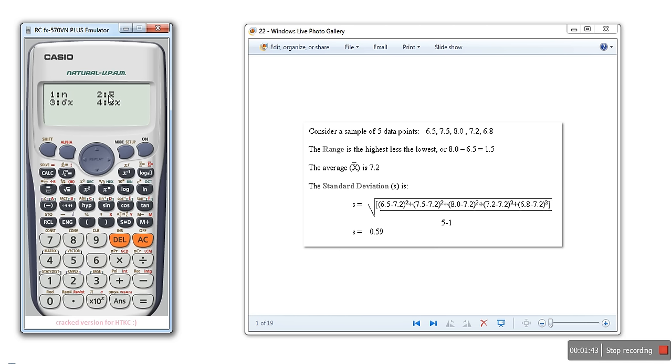First, we will calculate X-bar, so we select option 2 and press equals. The result is 7.2. As you can see, 7.2 is the average of the data given in this example.